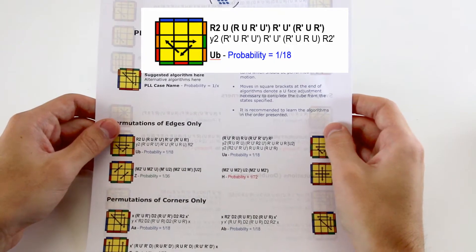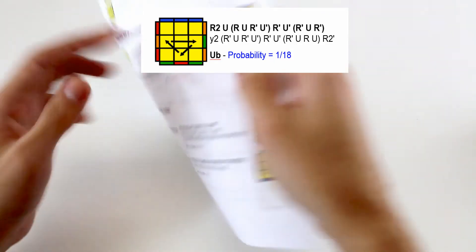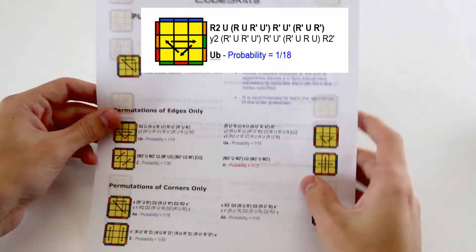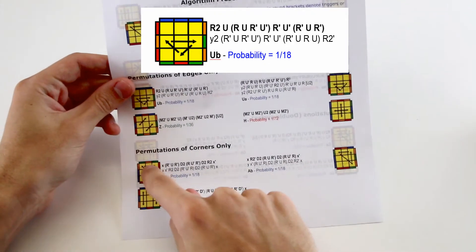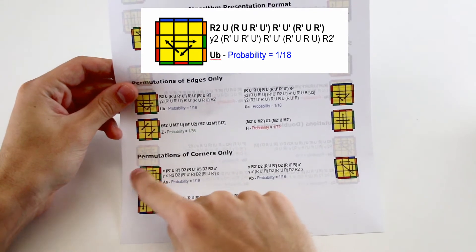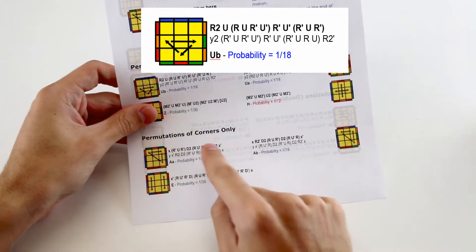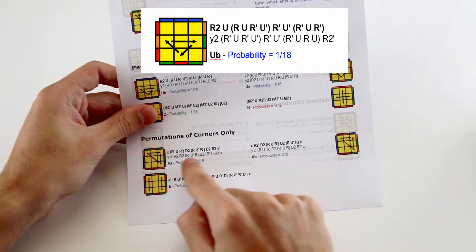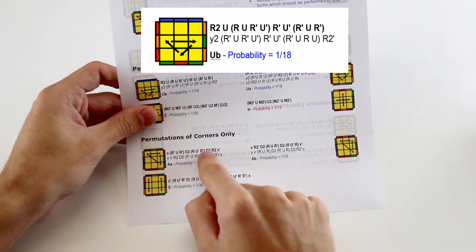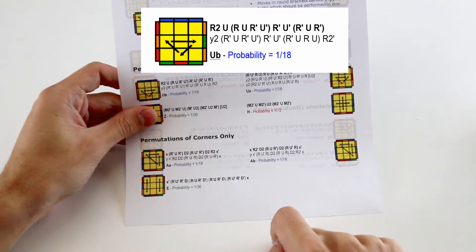This sheet shows you every single PLL case, and there are two pages. The first thing you'll see with each case is an image showing the pieces that need to be moved and how to recognize the case. The algorithm in bold is the suggested algorithm, and for most cases we also provide an alternative algorithm you can try out and see if you prefer.